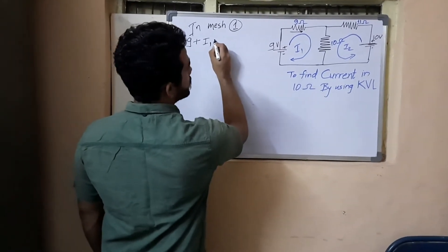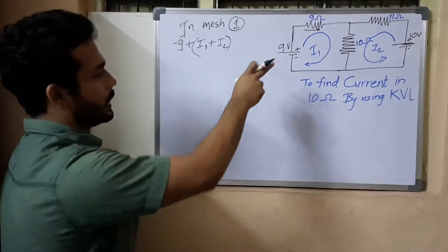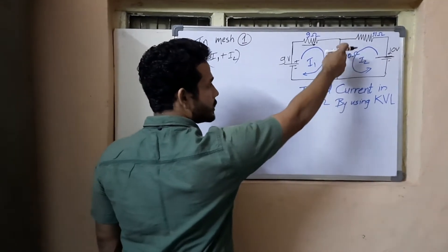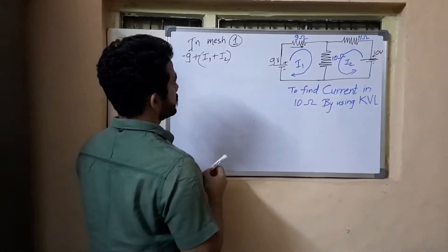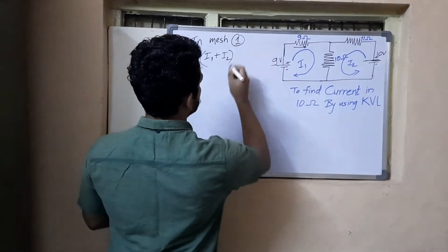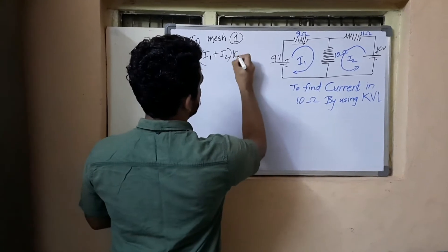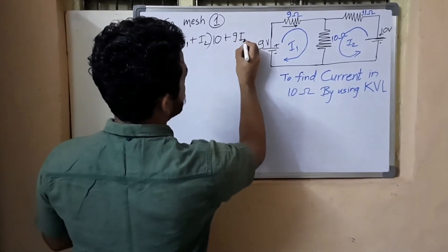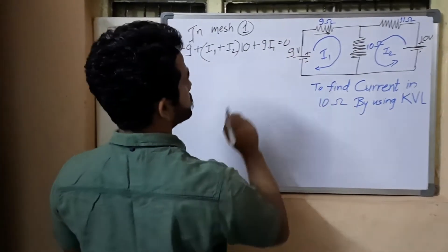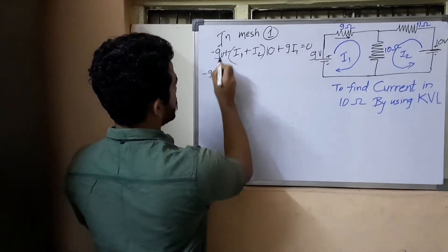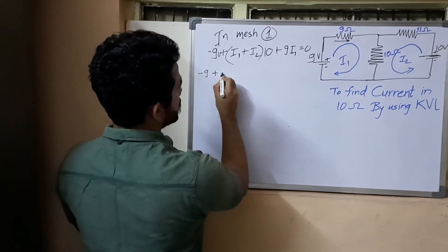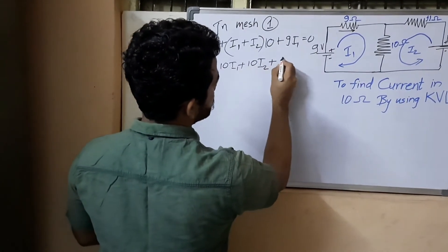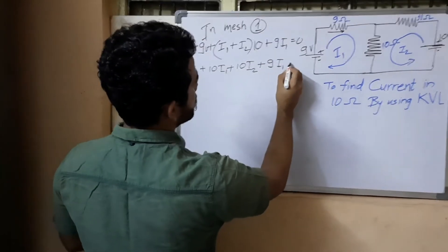I1 and I2 have an additive effect because they flow in the same direction, giving a voltage gain of plus 10(I1 + I2). Then there is also a voltage gain of plus 9·I1. So the KVL equation for mesh 1 becomes: minus 9 volts plus 10·I1 plus 10·I2 plus 9·I1 equals zero.